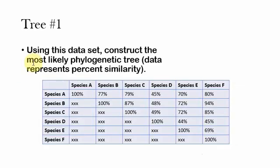In our first question it says using this data set construct the most likely phylogenetic tree. In this example the data represents percent similarity between the different species. Sometimes you'll see that the data represents differences between certain genes, differences in proteins. In this case it's percent similarity probably in some amount of DNA material.